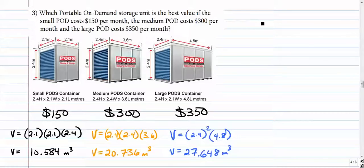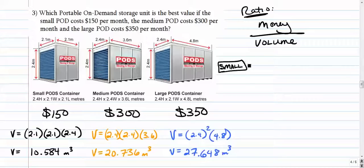To compare these, we want to think about how much money we are going to spend divided by how much volume we're getting. This is called a simple ratio, just a comparison of values. So money over volume. Let's do the small pod first. So the small pod is going to be money over volume. It's 150 over 10.584. And this ratio is going to give us a ratio that will tell us how many dollars it actually costs per cubic meter of volume. And this comes out to $14.17 per cubic meter.